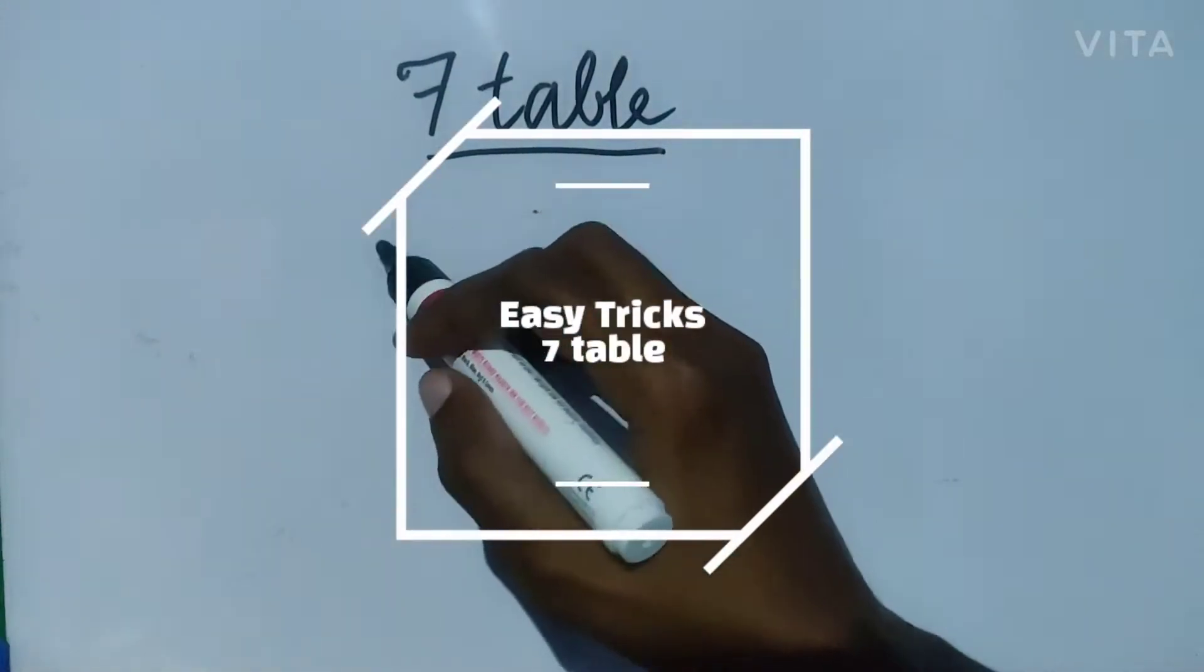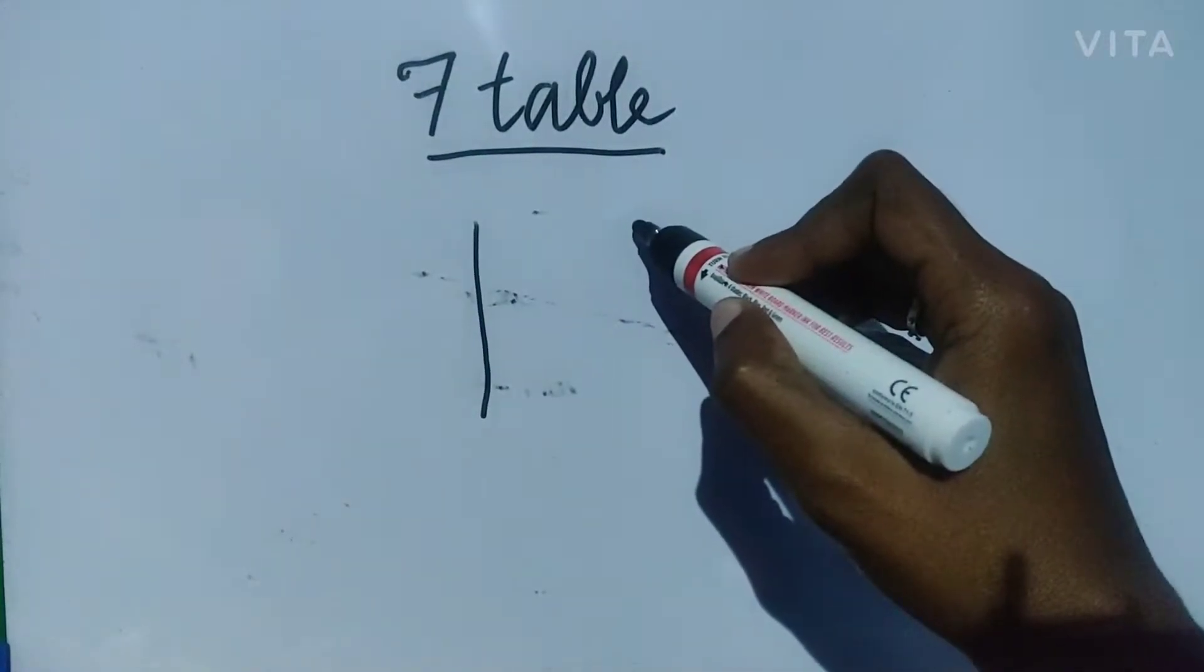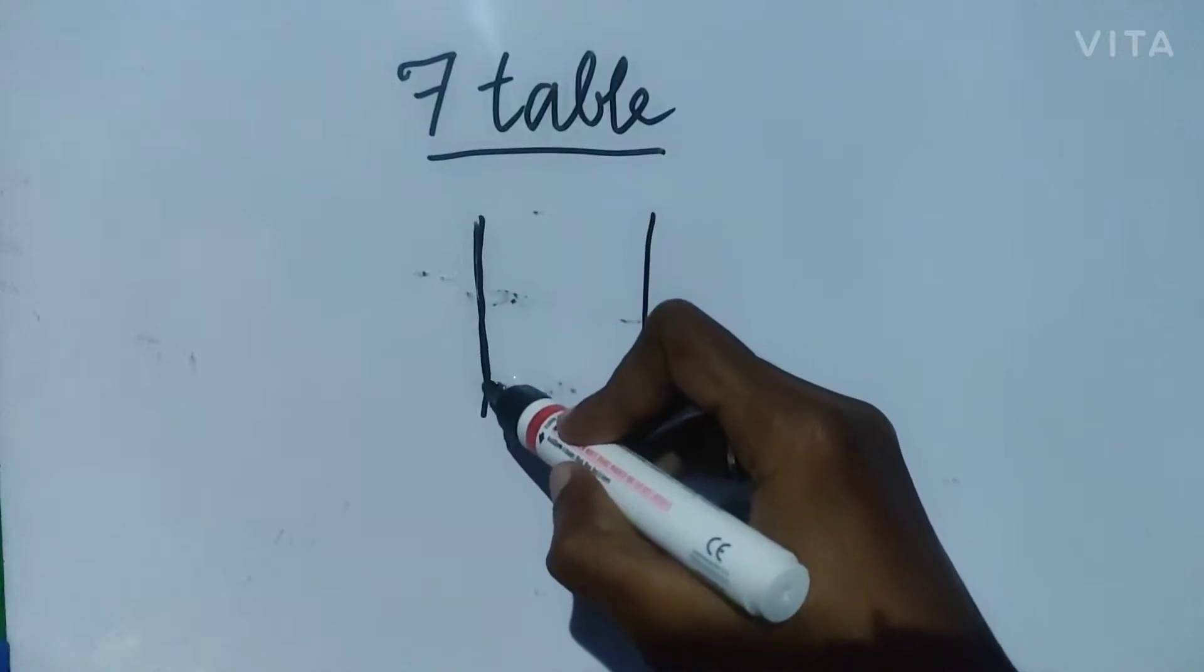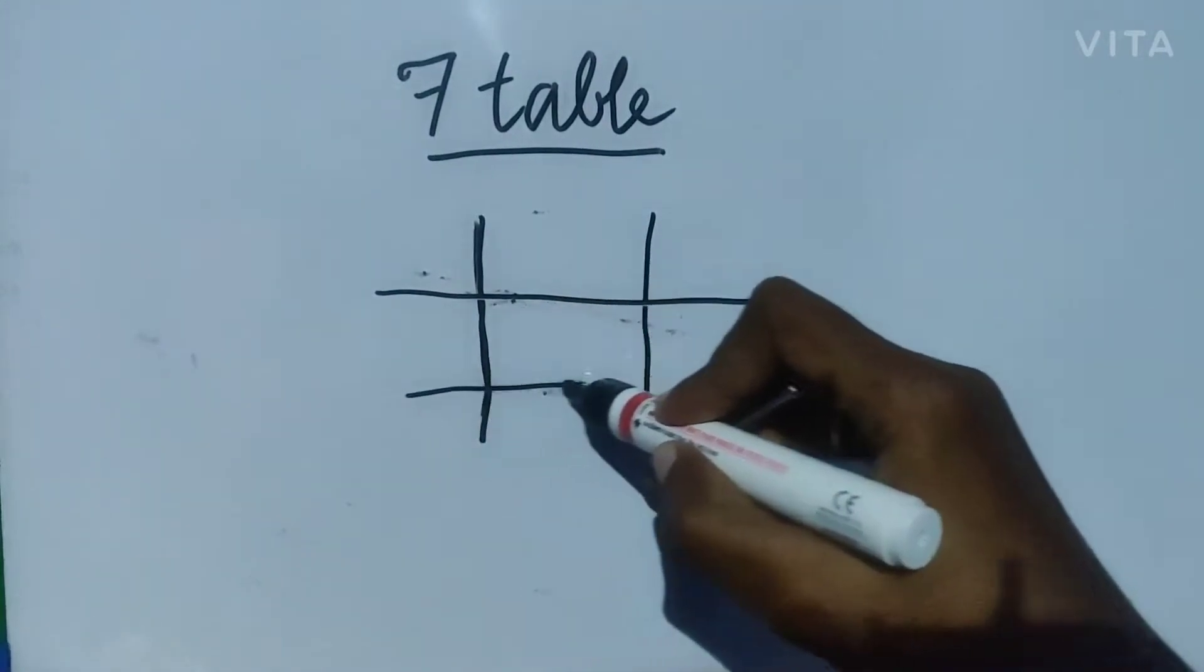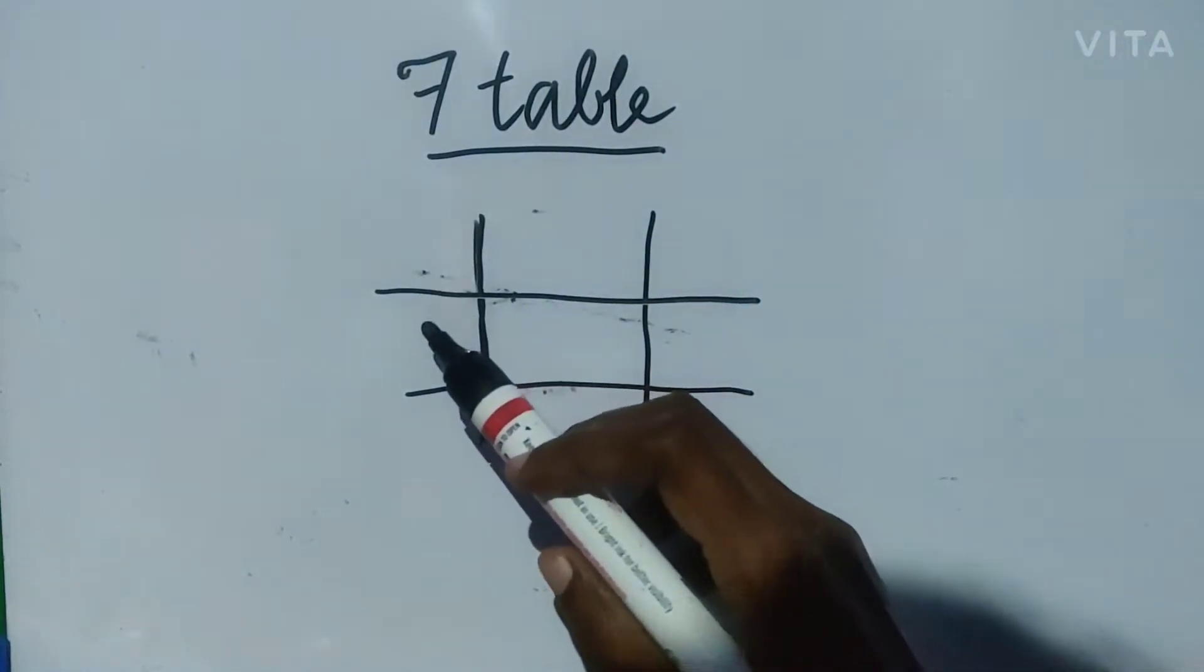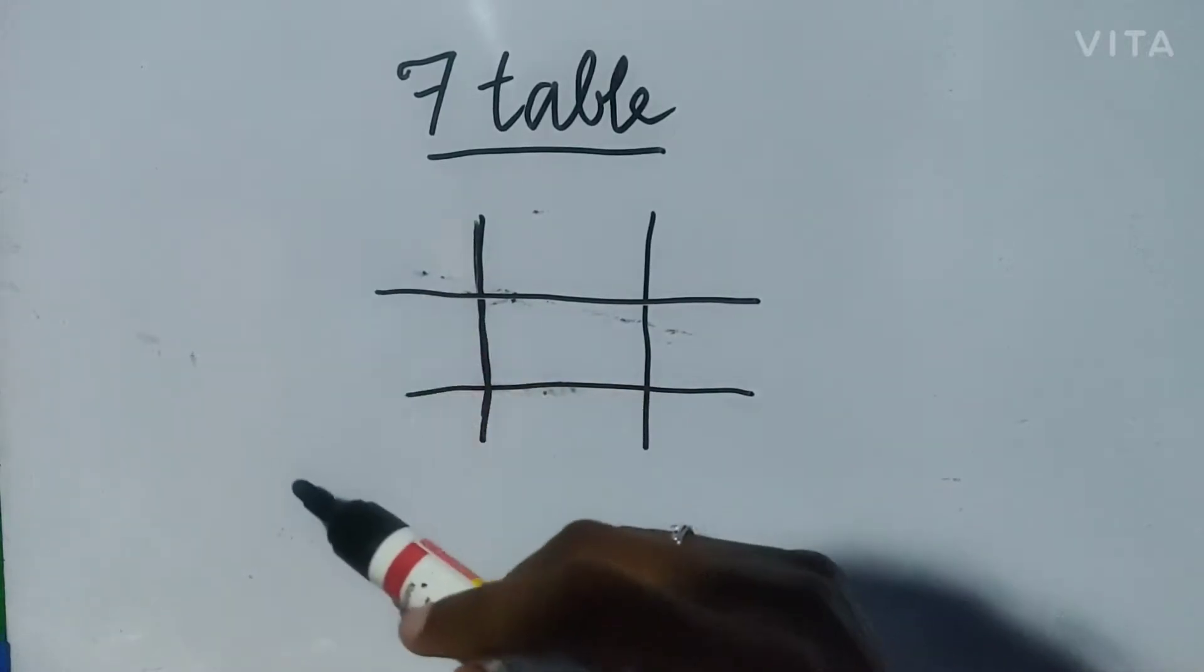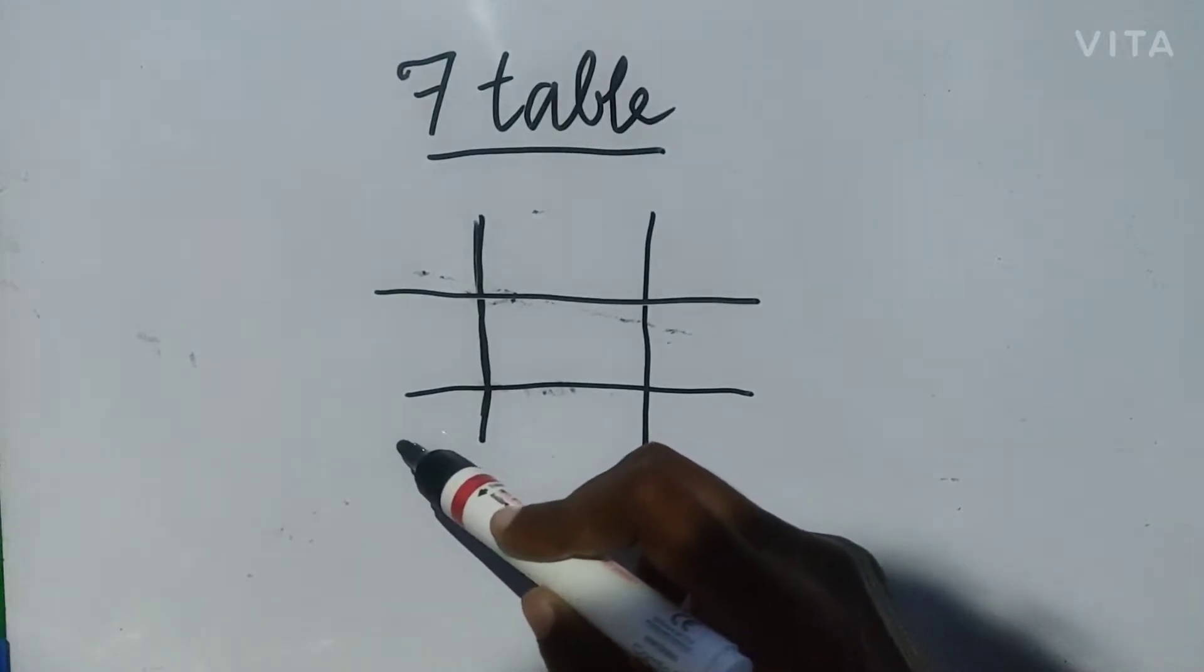Easy tricks to learn 7 table. For that, same thing like for 3 table, we have to draw two horizontal lines and two vertical lines. This is 7 table, so 7 should come, so we have to arrange the numbers 1, 2, 3 in such a way that 7 is coming here. For 3 table we arrange the numbers from 1 from the left corner down to top.